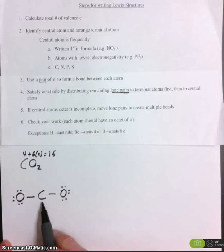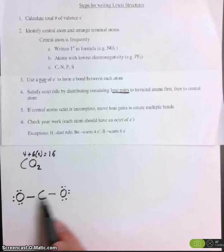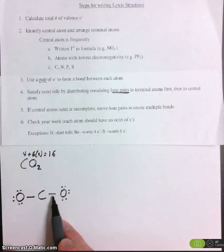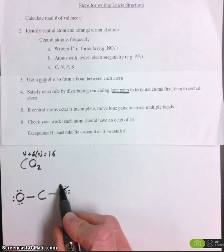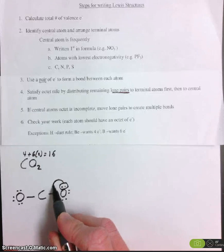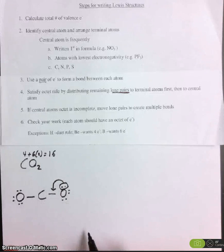Step number five, if central atom's octet is incomplete, move a lone pair to create a double bond. And you can see that this carbon has two, four electrons. It does not have eight, so its octet is incomplete. So take a lone pair and move it down to make a double bond.